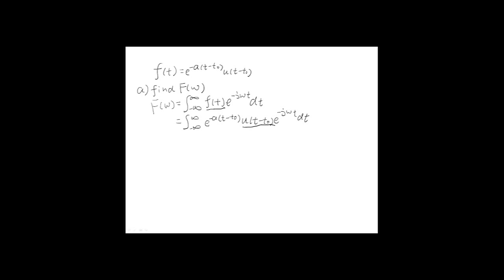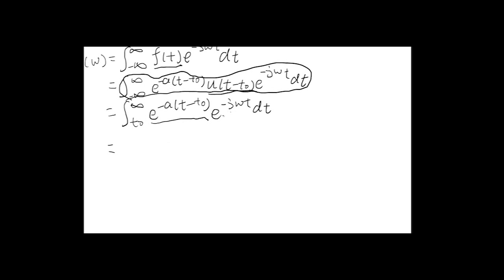This function has a value of zero when t is less than t_0. So we can express this integral as an integral from t_0 to infinity of e to the minus a(t minus t_0) times e to the minus j·omega·t dt, since the unit step equals one when t is greater than t_0. Expanding the exponential and combining terms, we get the integral from t_0 to infinity of e to the a·t_0 times e to the minus (a plus j·omega)·t dt.